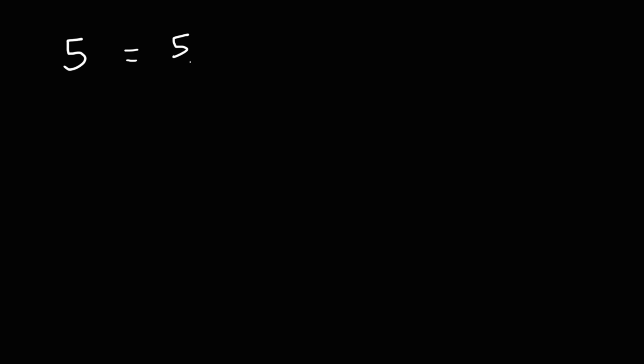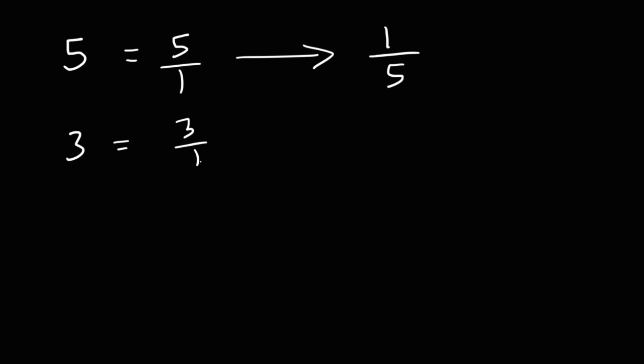Let's start with 5. What is the reciprocal of 5? 5 is the same as 5 over 1. To find the reciprocal of a fraction, all you need to do is flip the fraction. So the reciprocal of 5 over 1 is just 1 over 5. Similarly, 3 is 3 over 1, and flipping it gives us 1 over 3.